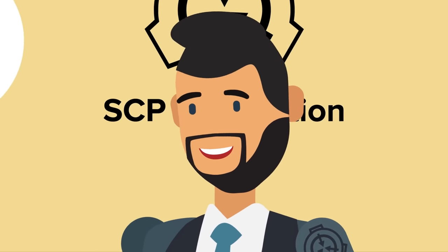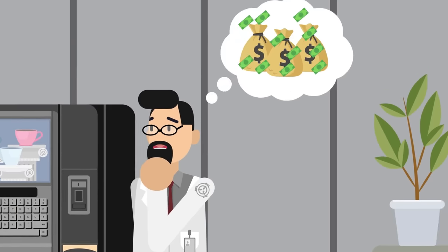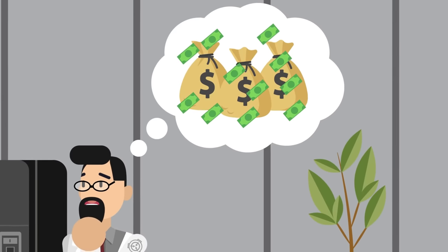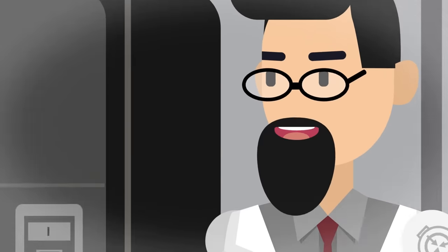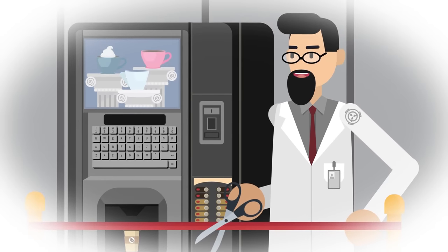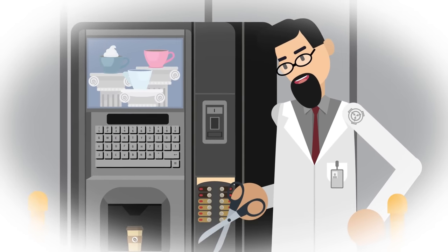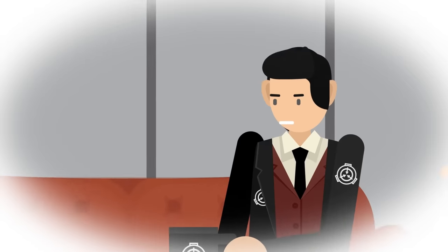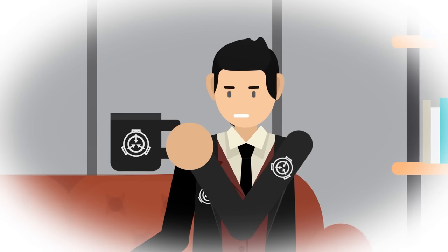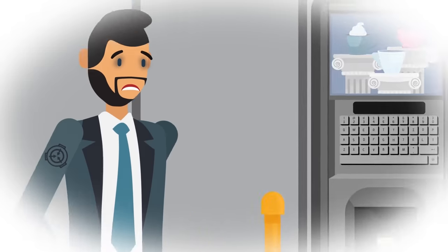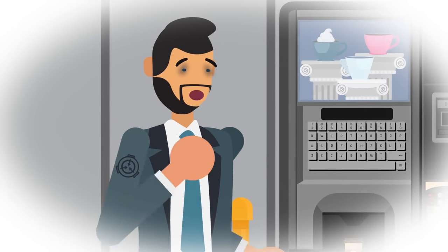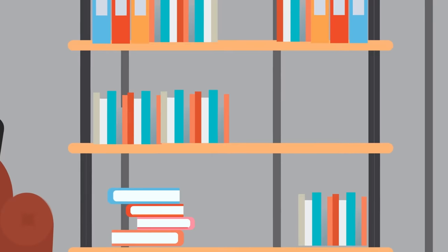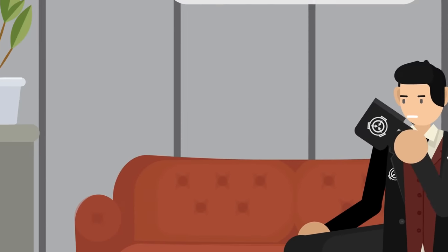One of the researchers had a great idea. Here was an anomaly that was practically harmless and could be a great little way for the Foundation to scale back its budget a little bit. They proposed putting SCP-294 into the break room it currently resides in, both to more easily conduct experiments and to save money when agents and doctors came in for lunch and needed a quick drink, or in the mornings where everyone was looking for coffee to wake them up. With no good reason not to, the machine was put in the break room.